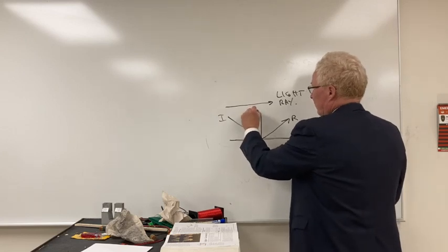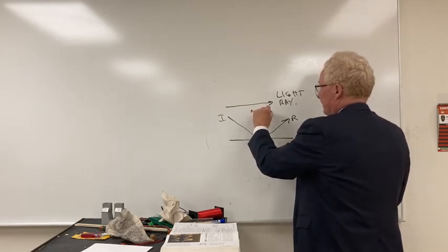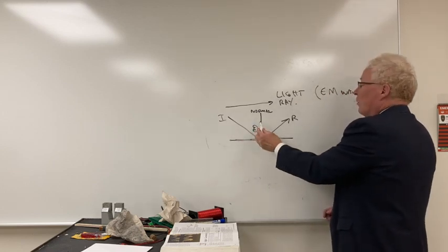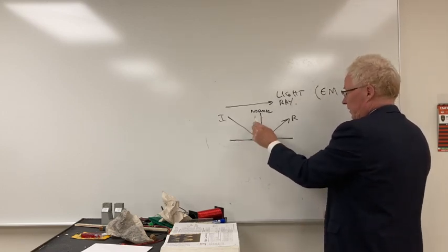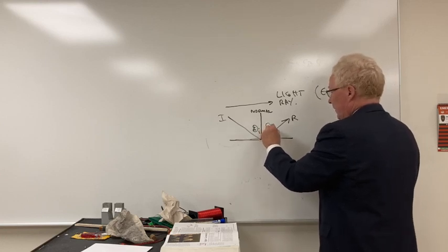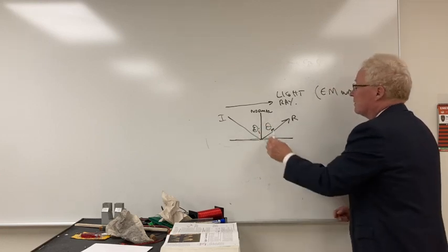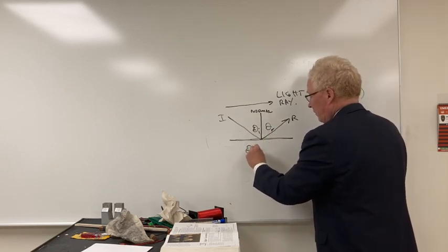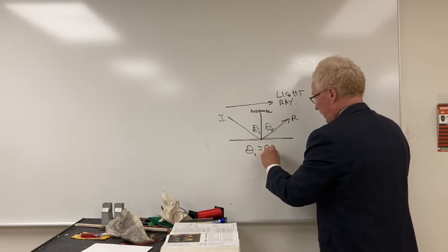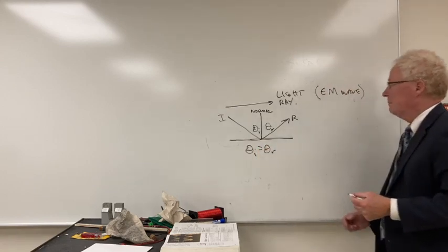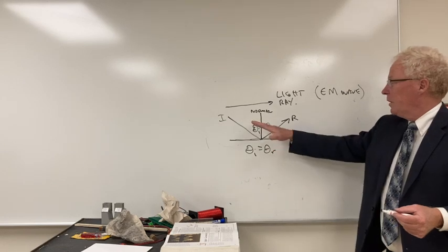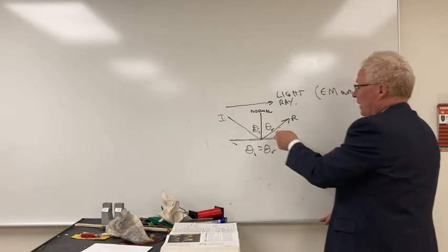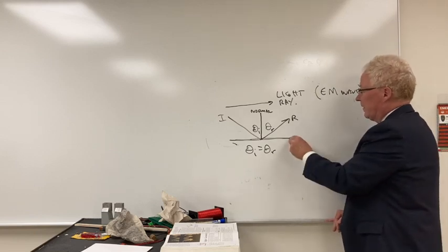We define what we call a normal. The angle of incidence is measured relative to the perpendicular. The angle of reflection is also measured relative to the normal. For normal reflection, the angle of incidence equals the angle of reflection. So incidence reflects — this is a mirror. Light bounces off the mirror.